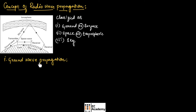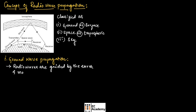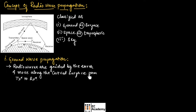First, let us understand the concept of ground wave propagation. In ground wave propagation, radio waves are guided by the earth and move along the curved surface of the earth from transmitter to receiver.